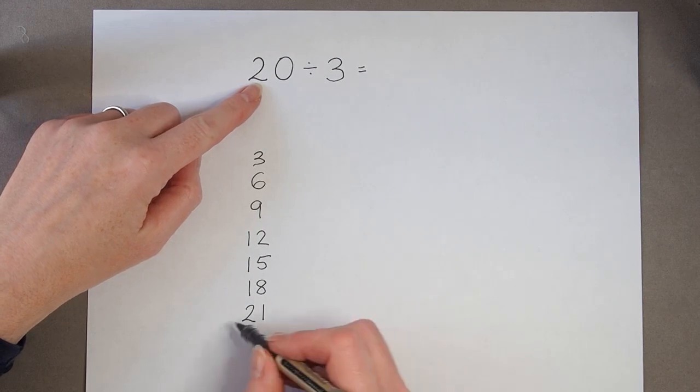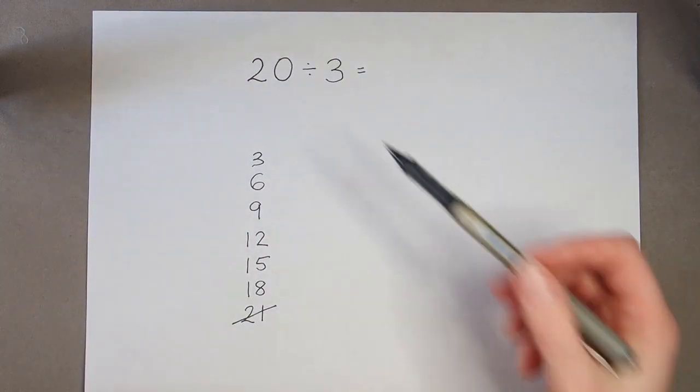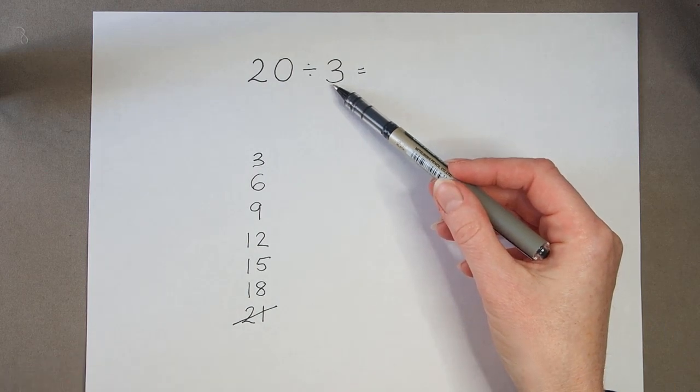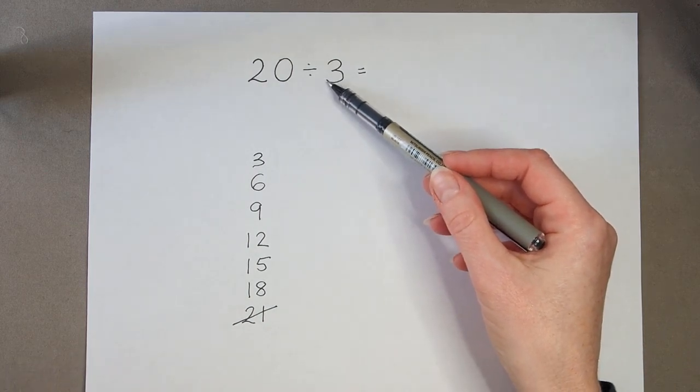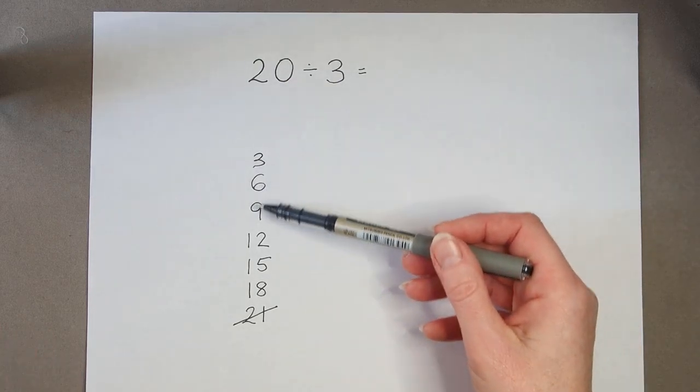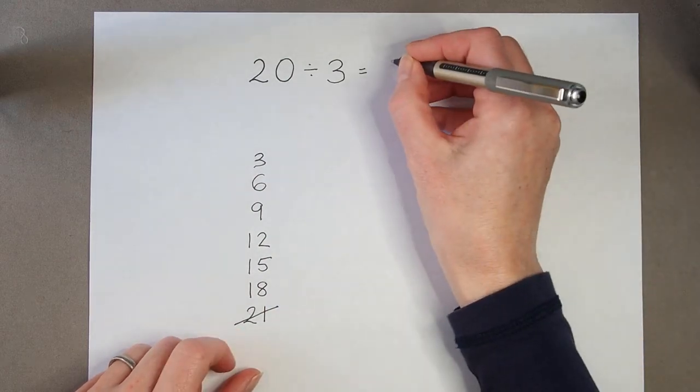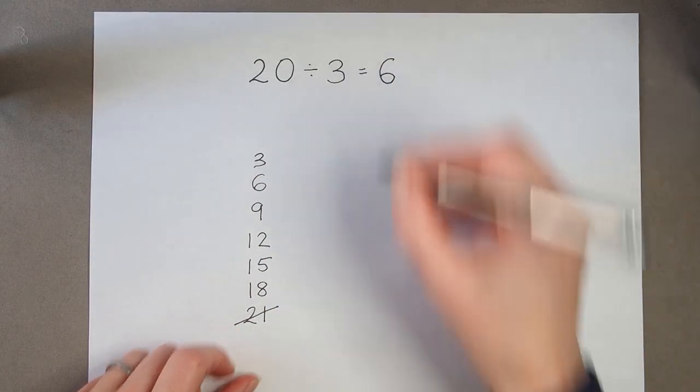21 goes past the number we've started with, so we can't use that one. So how many 3's, how many groups of 3, could we get if we have 20 altogether? 1, 2, 3, 4, 5, 6. I could count in 3's 6 times.